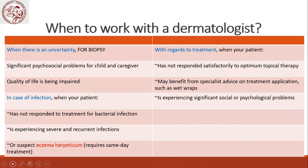When to refer to a dermatologist: when there is diagnostic uncertainty requiring biopsy, significant psychosocial problems, or impaired quality of life. In cases of infection, when patients have not responded to standard bacterial control and are experiencing severe and recurrent infections, or when eczema herpeticum is suspected—especially in atopic dermatitis patients—which is an urgent same-day condition. For treatment, when patients have not responded to optimum topical therapy, when advice on wet wrap application is needed, or when severe social or psychological problems are present.